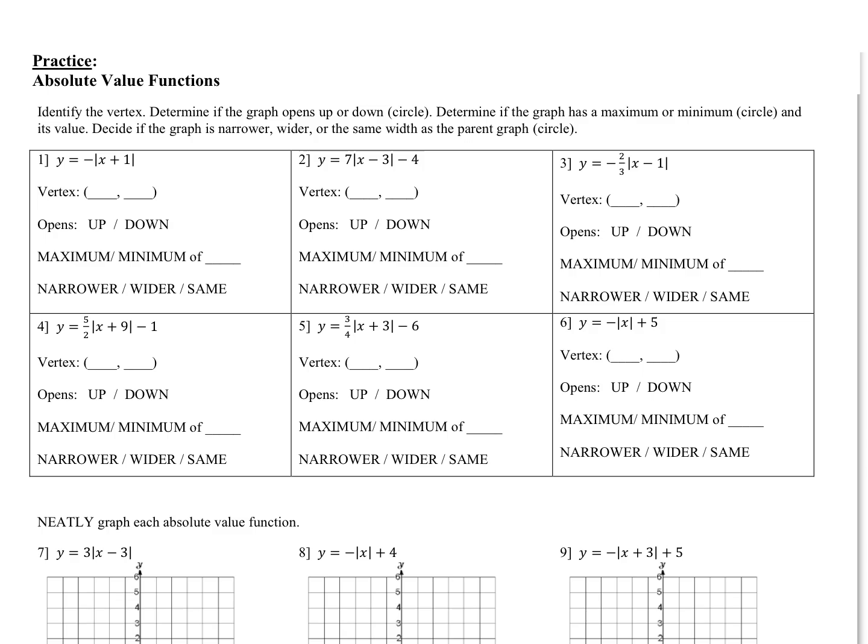Here, we are going to identify the vertex, determine if the graph opens up or down, and circle that. Determine if the graph has a maximum or minimum, circle that and its value. Decide if the graph is narrower, wider, or the same width as the parent graph, and circle that part.